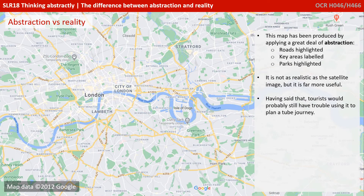This map has been produced by applying a great deal of abstraction. Roads have been highlighted, key areas labelled, parks highlighted. It's not as realistic as the satellite image, but it's far more useful.